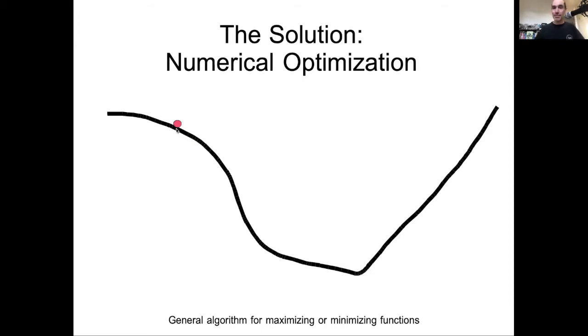And this hill, in this case, is the function itself. And I also want to point that what we're talking about here is actually a general algorithm for maximizing or minimizing functions, so for doing optimization more broadly. We're going to use it for doing maximum likelihood, but it's actually a much more general solution that we'll use later in the course for optimizing things other than just likelihoods.